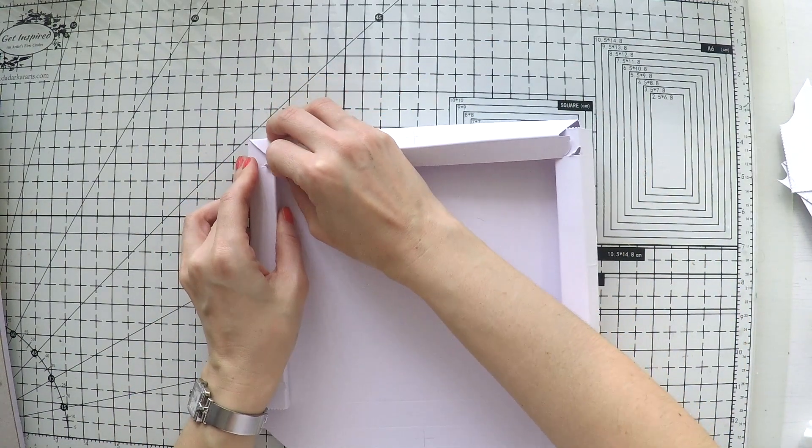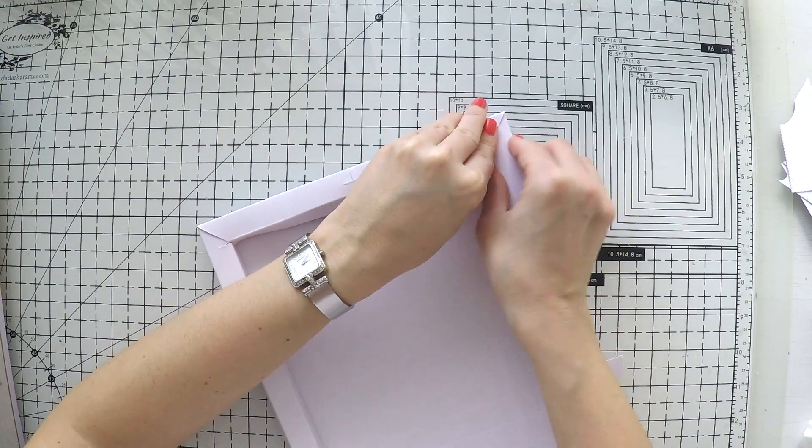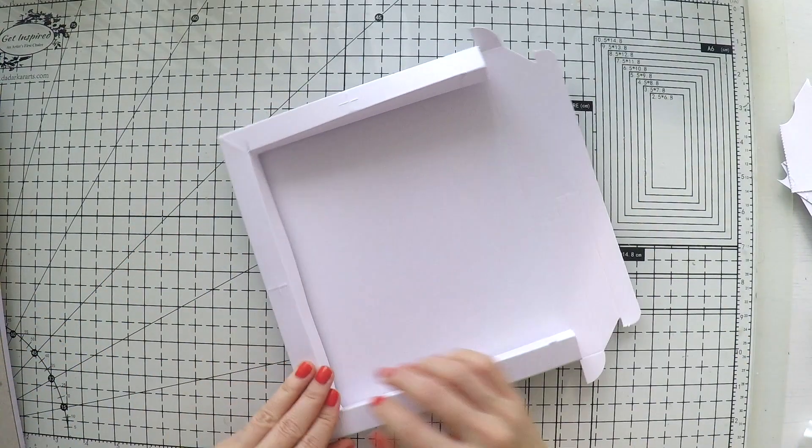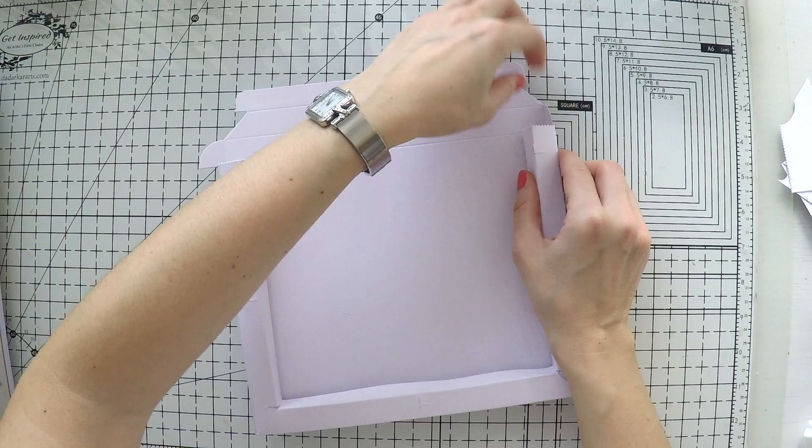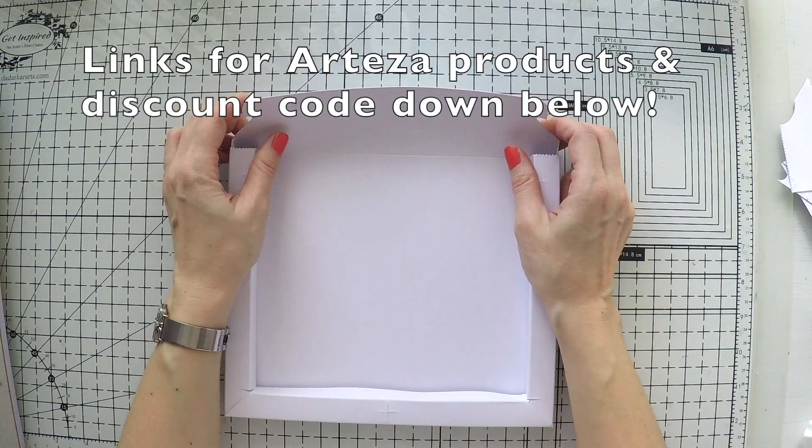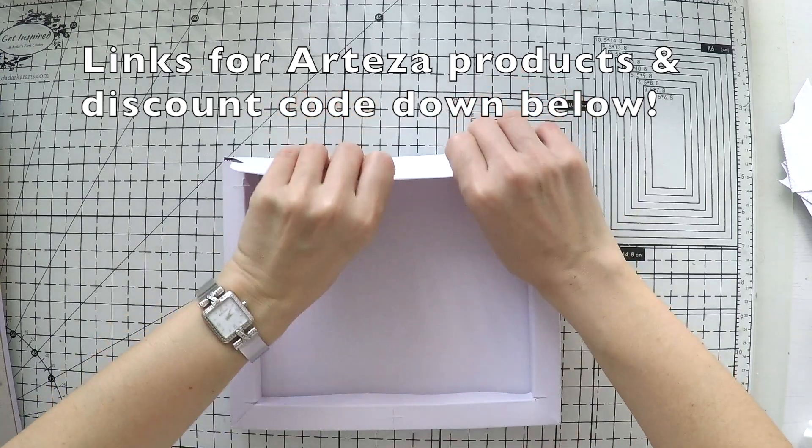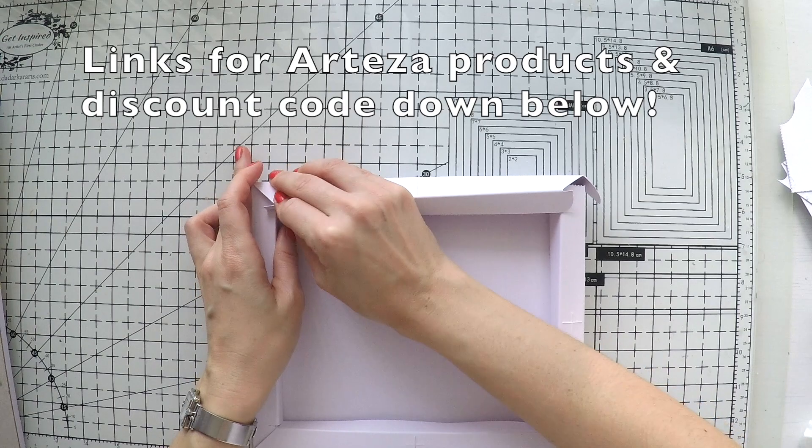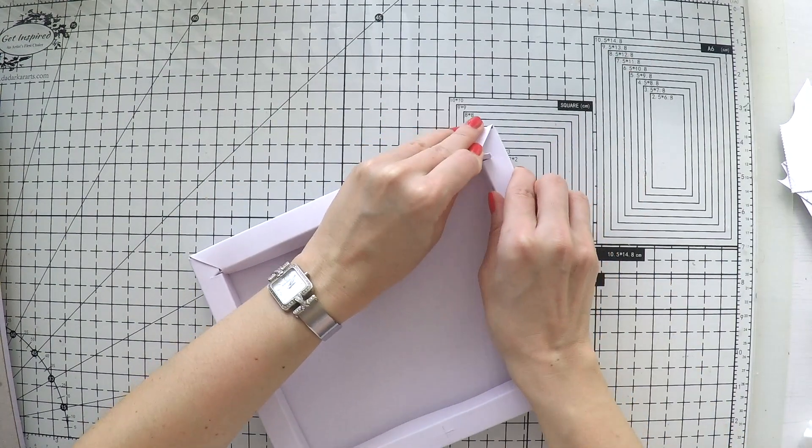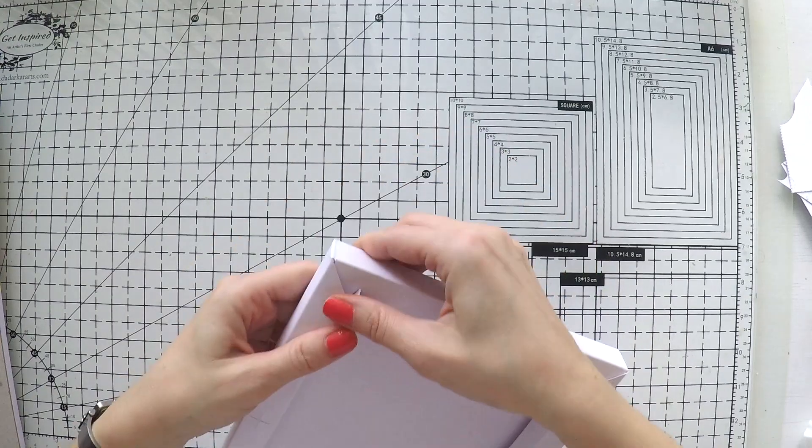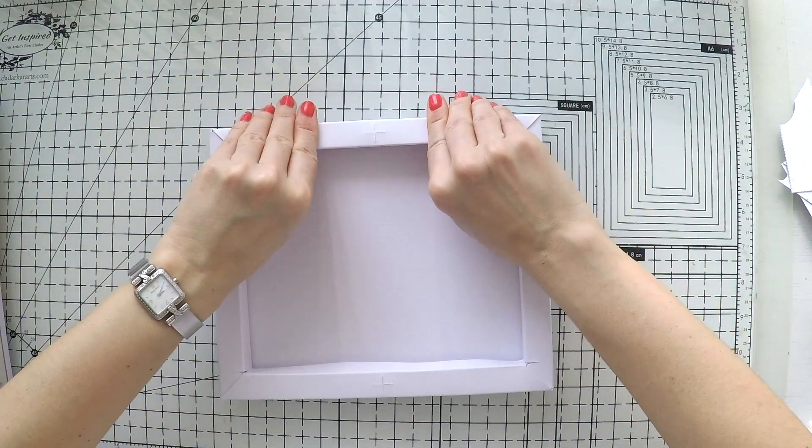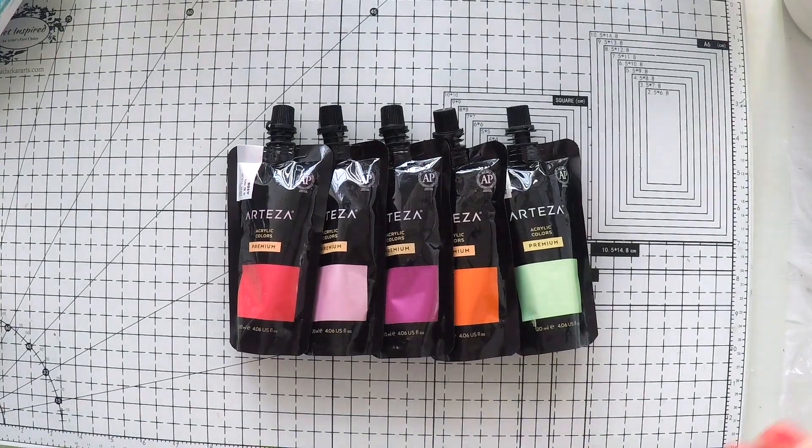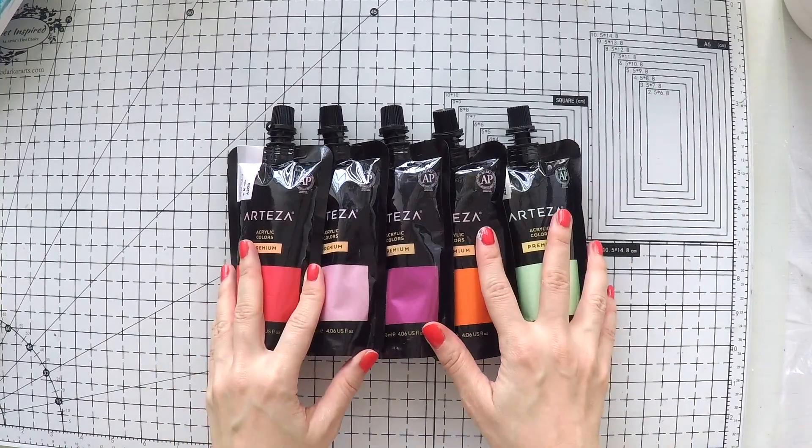This pad comes in different sizes by the way, so check out the links that I will put down below to find the one that suits your taste. As usual I will leave down below my code to give you a discount when you purchase anything from Arteza's website. I think I have my frame now which is nice. It's also a good alternative for canvases and other things that we use for more dimensional projects.